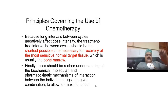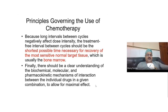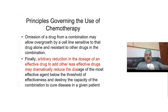How do you decide the best time interval between two cycles? This is determined by looking at the recovery of normal body cells. The most sensitive normal tissue to chemotherapy is bone marrow, so you give chemotherapy and allow optimal time for the bone marrow to recover back to normal before giving a second cycle. It is also important to know the biochemical, molecular, and pharmacokinetic mechanisms and interactions between individual drugs before combining them, otherwise you end up having more toxicities.